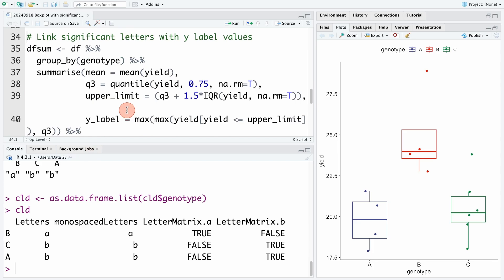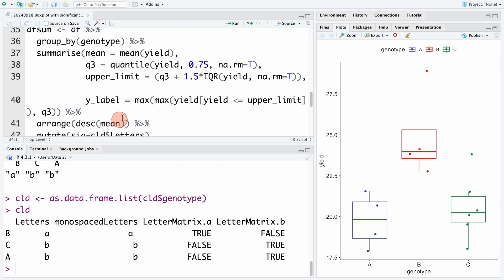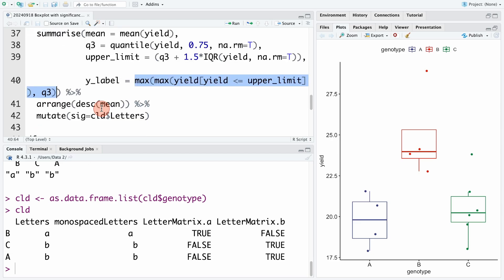In the following step, we create a table which has significant compact letters and Y label values for the compact letters. We want the compact letters sit just above the upper whiskers or the third quartile depending on each situation. We need to calculate the mean of yield to arrange yield matching with the compact letters that were arranged from the largest to the lowest. You also need to calculate the third quartile upper limit to exclude upper outliers and Y label values for the compact letters. The Y label values are the max value of the max yield, which is less than or equal upper limit, and the third quartile. Why do we use this code?